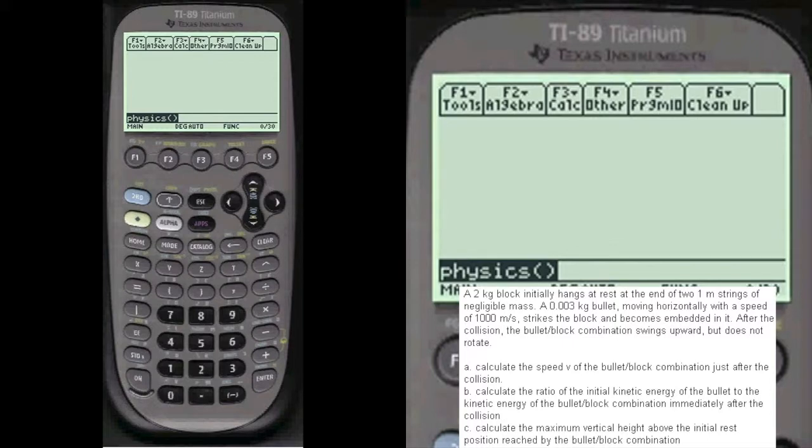And Part C: Calculate the maximum vertical height above the initial rest position reached by the bullet block combination. So let's do that and see how my programs work on this one.